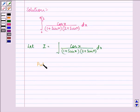Now if we put sin x equal to t, this implies cos x dx is equal to dt.